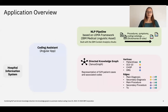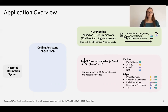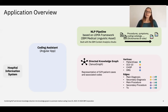Our application is built on three components which interact with the hospital information system. First, we have the coding assistant application, a UI that a user leverages for the analysis of texts. There is an NLP pipeline built on dictionaries and rules that takes natural language text documents as input and identifies medical concepts in them by using the IBM medical linguistic asset. The third component is a knowledge graph.